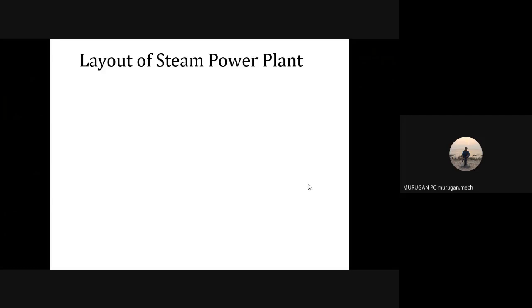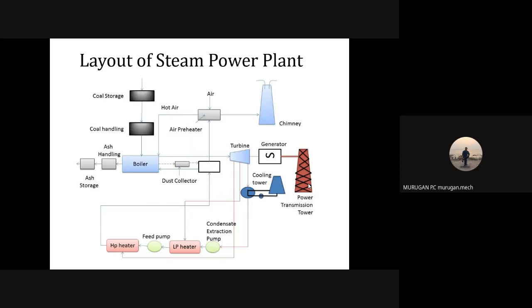In this steam power plant, steam is an important medium for producing mechanical energy. A steam power plant is also called a thermal power plant, which converts the energy stored in fossil fuels in the form of heat energy. This type of steam power plant uses steam as the working fluid. The steam is produced in the boiler by using coal as a fuel, and water is converted into steam by means of the boiler. From the boiler, heat energy is converted into mechanical energy by means of the steam turbine, and the mechanical energy is converted into electrical energy with the help of the generator.